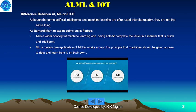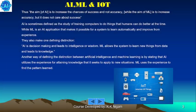Although the terms AI — that is artificial intelligence — and machine learning are often used interchangeably, they are not the same thing. As Bernard Marr, an expert, points out in Forbes: AI is a wider concept of machine learning, being able to complete tasks in a manner that is quick and intelligent. ML is merely one application of AI that works around the principle that machines should be given access to data and learn from it on their own. Thus, the aim of AI is to increase the chances of success and not accuracy, while the aim of ML is to increase accuracy.